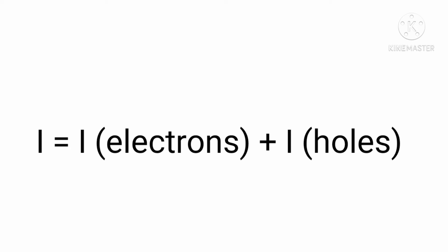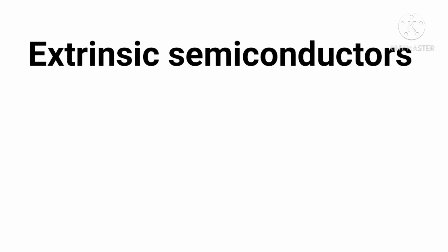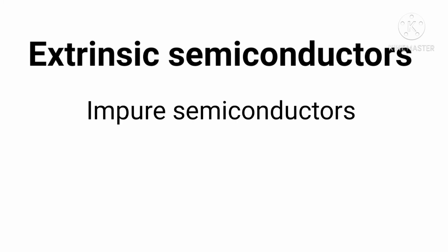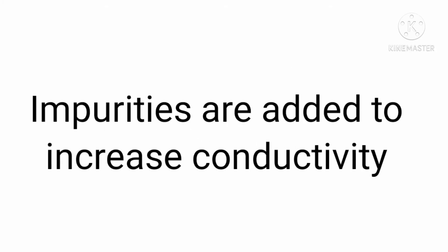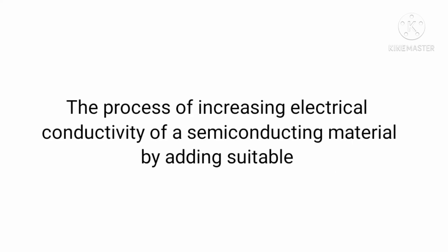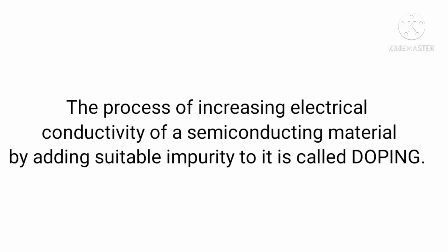In intrinsic semiconductors, current is produced but the value is very small and cannot be used for practical applications. To increase conductivity, we add impurities to the intrinsic semiconductor. This process is called doping, and the impurity atom is called a dopant. Two types of impurities can be added: pentavalent impurity and trivalent impurity.